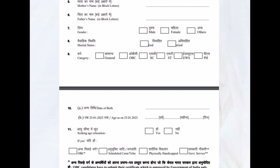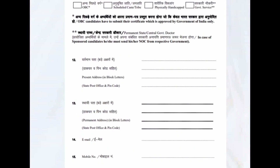Fill in the date of birth and calculate the age properly in the column provided. Then for age relaxation, if applicable, indicate what category of relaxation you are using — whether it is OBC, SC/ST, or PH. Then write the address manually in the space provided.